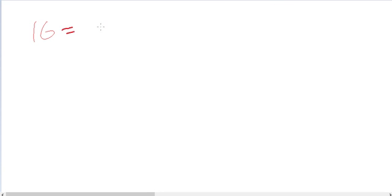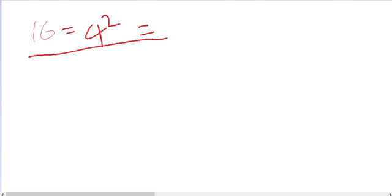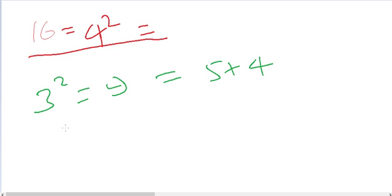For example, 16 can be represented as 4 squared. 16 can also be presented as a sum of two consecutive natural numbers, like 10 plus 6, or 9 plus 7, or 8 plus 8, or 7 plus 9. Let's take an odd number first — 3 squared is 9.